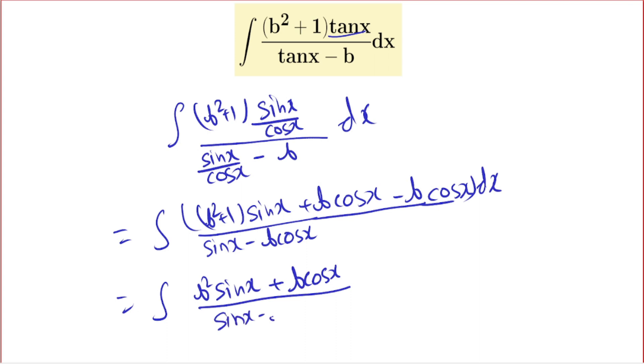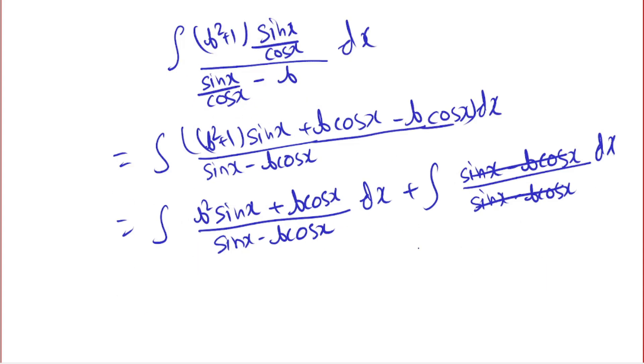Sine x minus b cos x dx, plus we are left with sine x minus b cos x. Numerator and denominator we have same thing sine x minus b cos x and dx, so we can cancel this. Okay, so here if you look at this we can take common b and we are left with b.